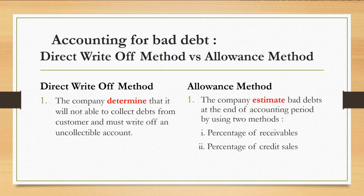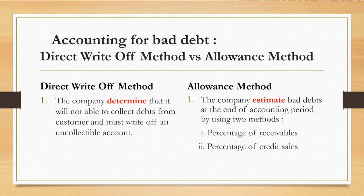Now we look at the difference between the direct write-off method and the allowance method. Under the direct write-off method, the company determines that it will not be able to collect debts from a customer and must write off an uncollectible account. Under the allowance method, the company estimates bad debts at the end of the accounting period using two methods: percentage of receivables, and percentage of credit sales.